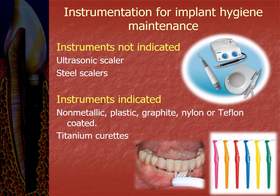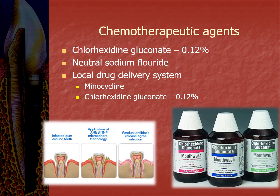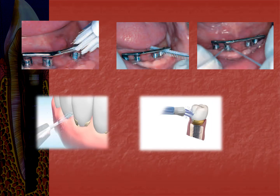Regarding instrumentation for implant hygiene maintenance, ultrasonic scalers and steel scalers are not indicated. Instruments coated with plastic, graphite, nylon, or Teflon are indicated, and titanium curettes are also used. Chemotherapeutic agents for hygiene maintenance include chlorhexidine gluconate 0.12%, neutral sodium fluoride, and local drug delivery systems such as minocycline and chlorhexidine gluconate — including the tetracycline strip called Actacyte and Aristine with minocycline discussed in the previous session. Oral hygiene aids include nylon brushes, interdental brushes, dental floss, oral irrigators like the Waterpik system, and antiseptic and antibacterial mouthwashes.